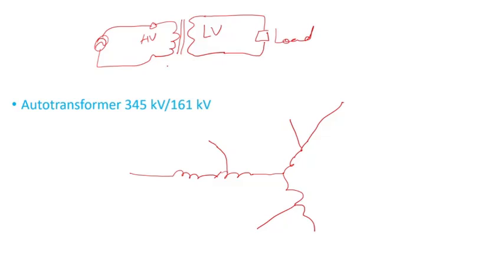In a pure two-winding transformer, the two windings are not connected electrically — they are only magnetically coupled. When you apply voltage, flux flows through the core and induces voltage in the low voltage winding. In an auto transformer, however, there is a series winding that is electrically connected to a common winding. The H1 terminal includes the series plus common winding, while the X1 terminal has only the common winding, but they are electrically connected.